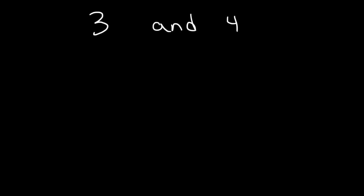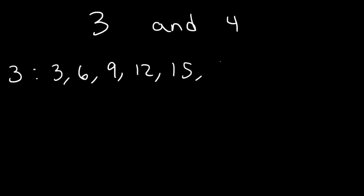A simple method you can use is to make a list. Let's start with 3. Multiples of 3 are 3, 6, 9, 12, 15, 18, 21, 24, 27, and so forth — you can keep adding 3s.